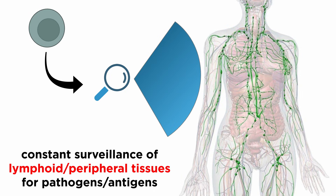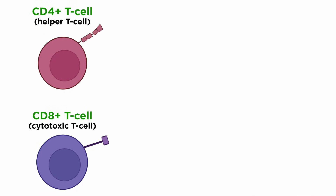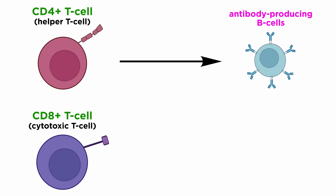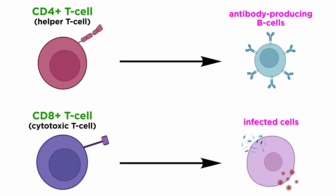T cells are key mediators in mounting an effective and sustained adaptive cell-mediated host immune response. These cells constantly survey the lymphoid and peripheral tissues for pathogens and antigens, such as peptides or lipids, prominently displayed by major histocompatibility complex molecules of other cells. These cells can be classified broadly as either helper T cells or cytotoxic T cells, differentiated based on the cell surface markers CD4 and CD8. CD4-positive T cells participate in the generation of antibody-producing B cells, while CD8-positive T cells directly kill infected targets.